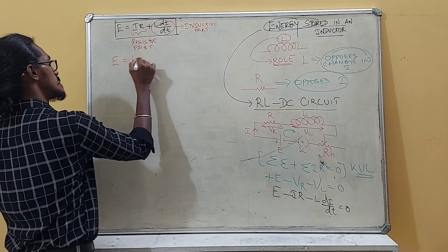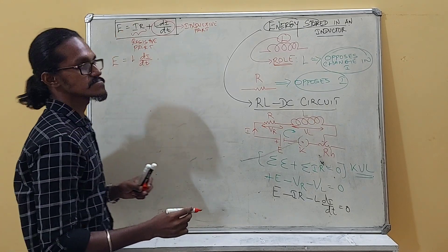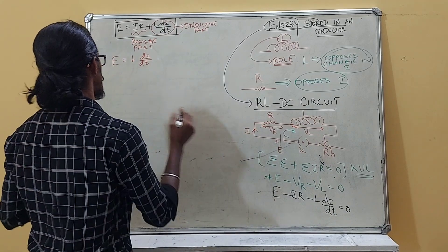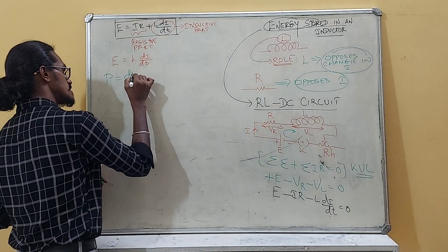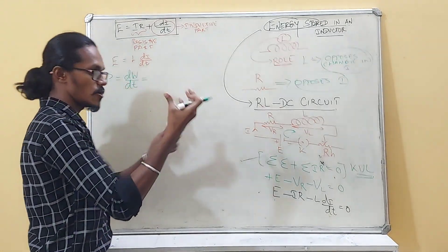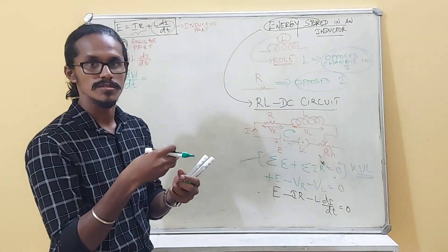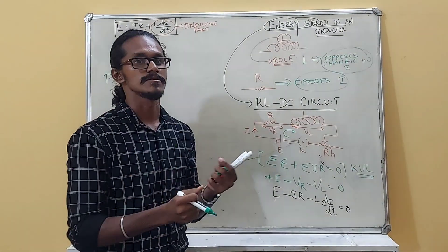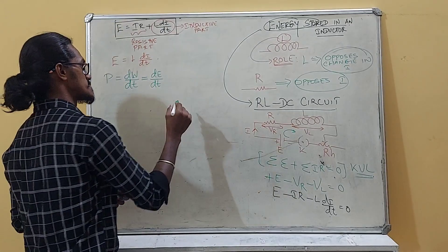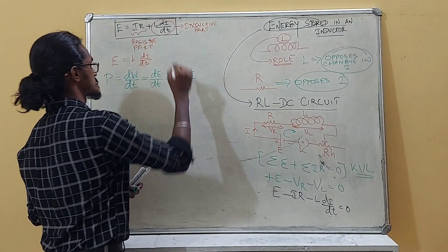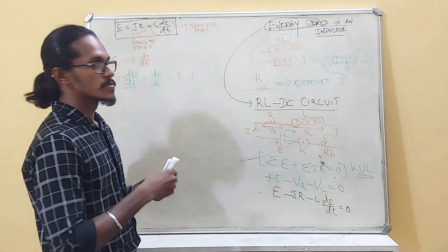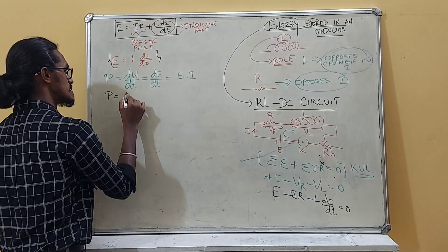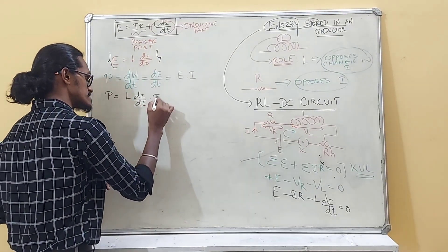The inductive EMF is L(dI/dt). Power is work done per unit time, dW/dt, and in an electrical circuit power is also E × I. Substituting, we get P = L(dI/dt) × I.